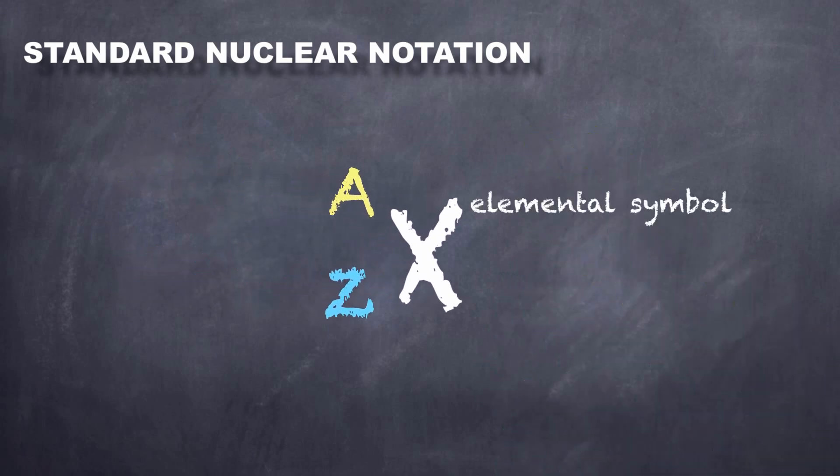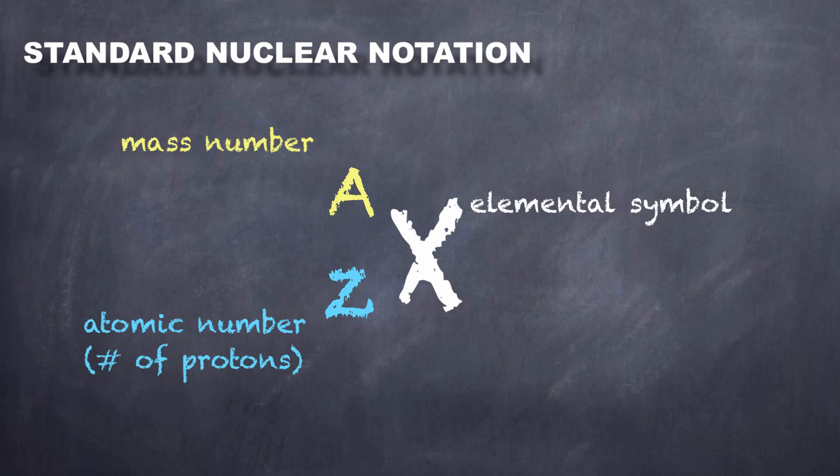Now typically the setup is something like this. We have X representing the elemental symbol for the particular atom that we're going to create a representation of. We have two other pieces of information, the atomic number and the mass number. The atomic number, which is equal to the number of protons, defines what an element is.